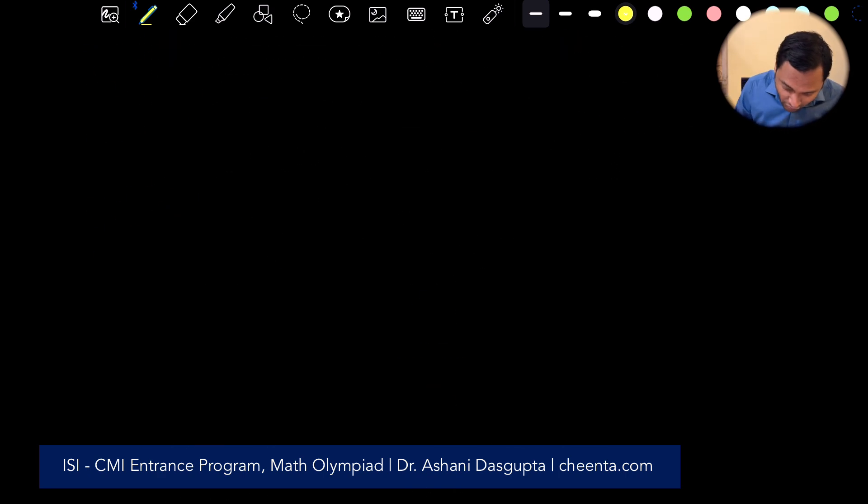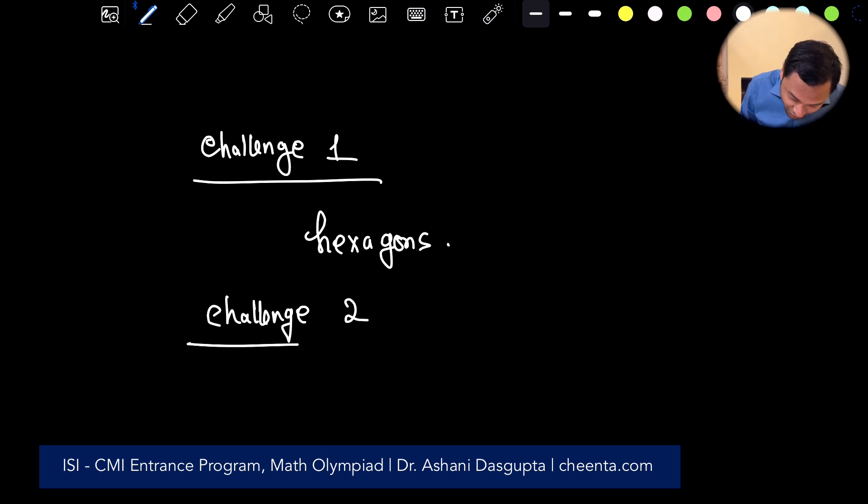So, here is a challenge question for all of you. Challenge one: do the same problem with hexagons. And challenge two: can you find a general formula for n-gons? That means, if you have a n-sided regular polygon, can you find out the area of the inscribed polygon and the circumscribed polygon and check the ratio of those two areas? Ideally, the ratio of those two areas should converge to one. Because after all, both of them are approaching the area of the circle.